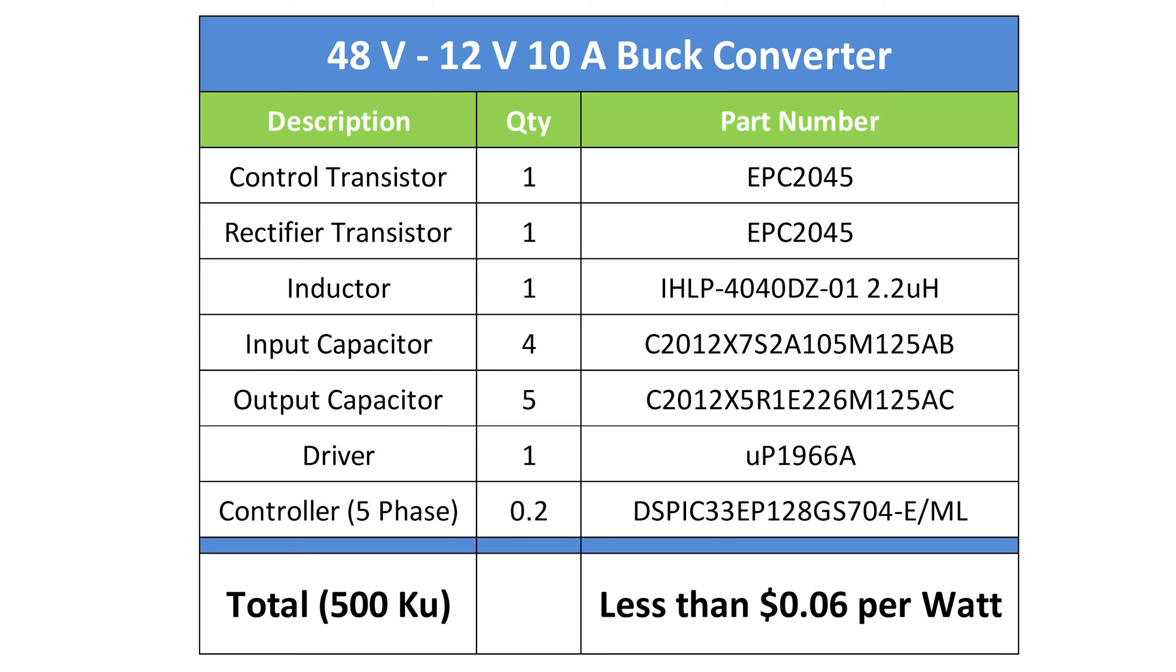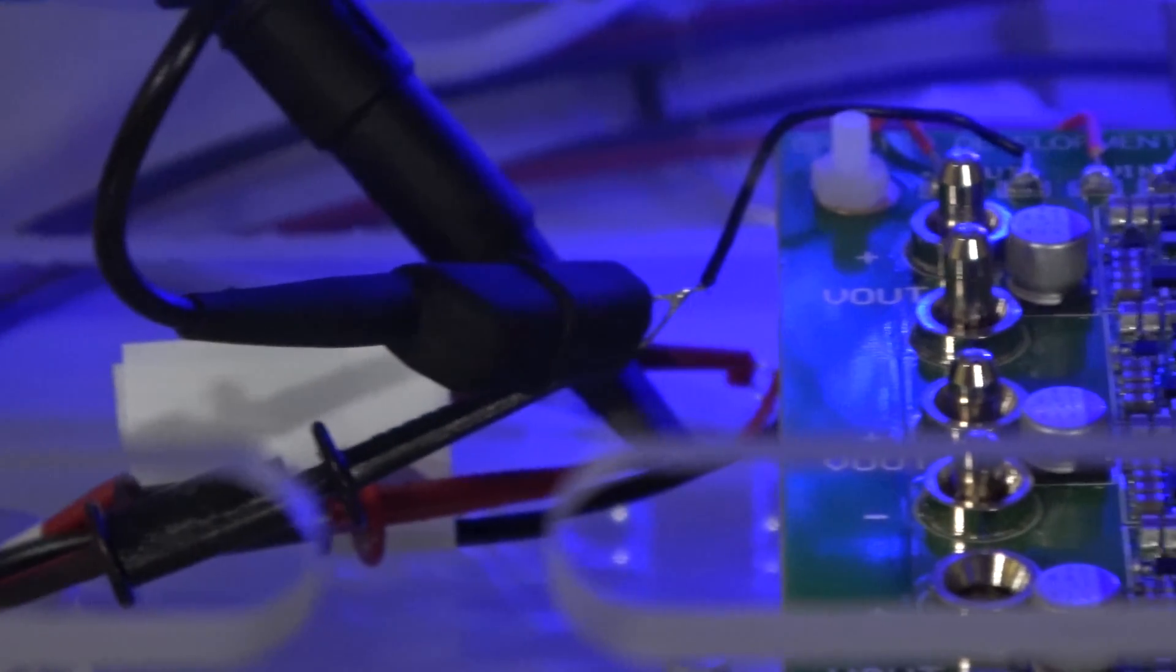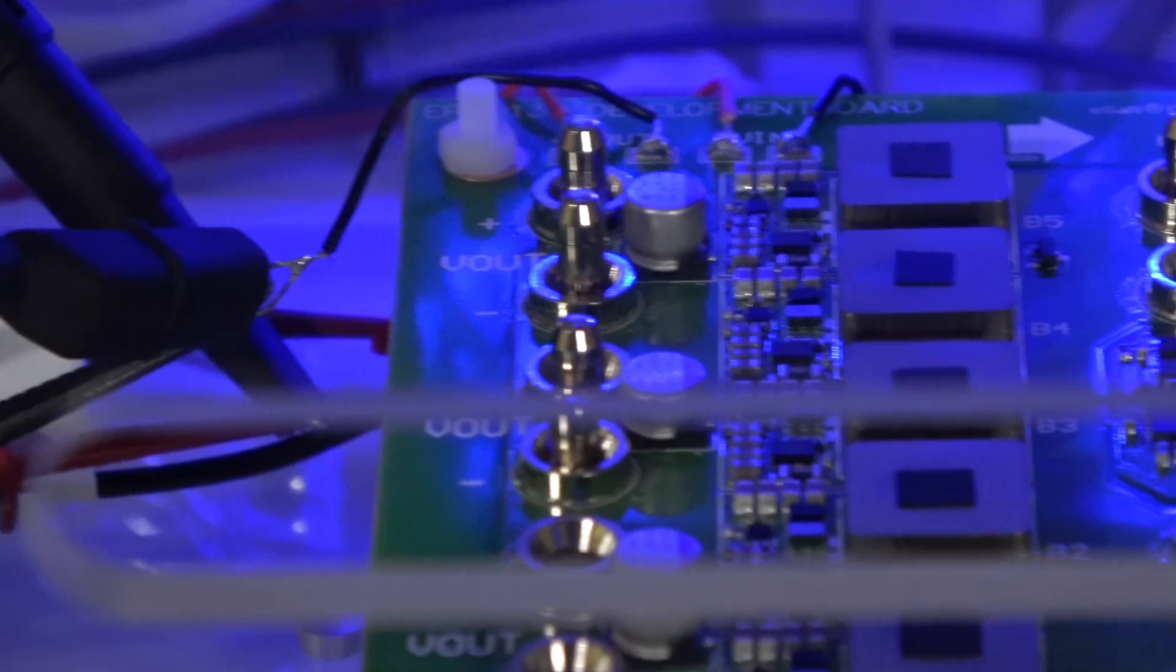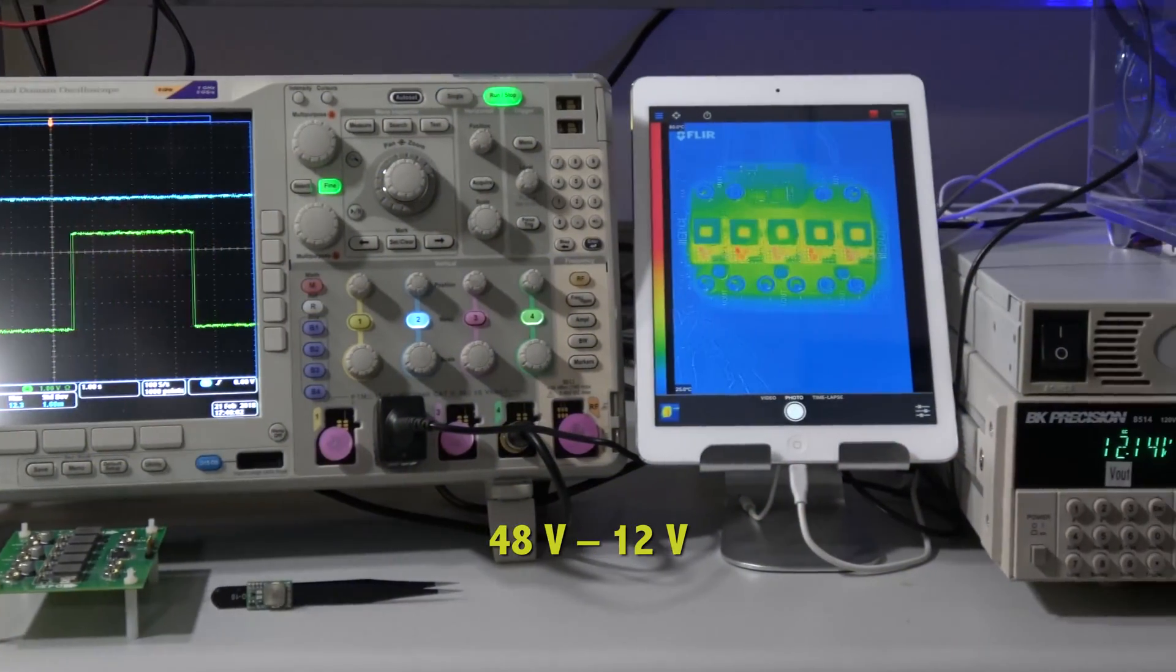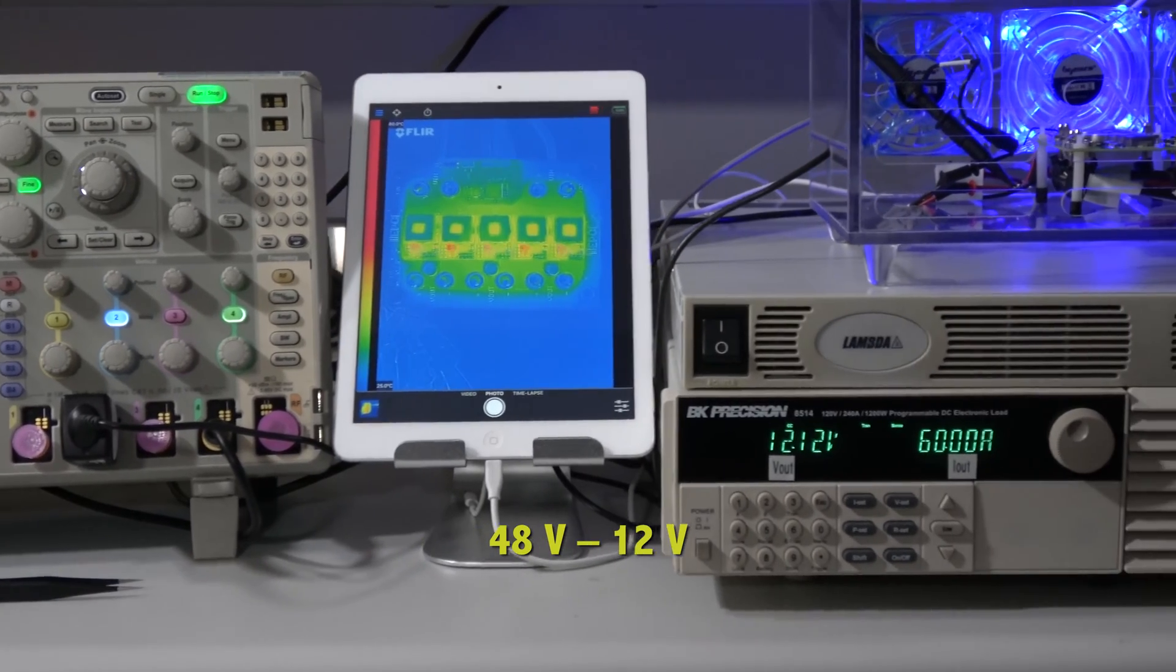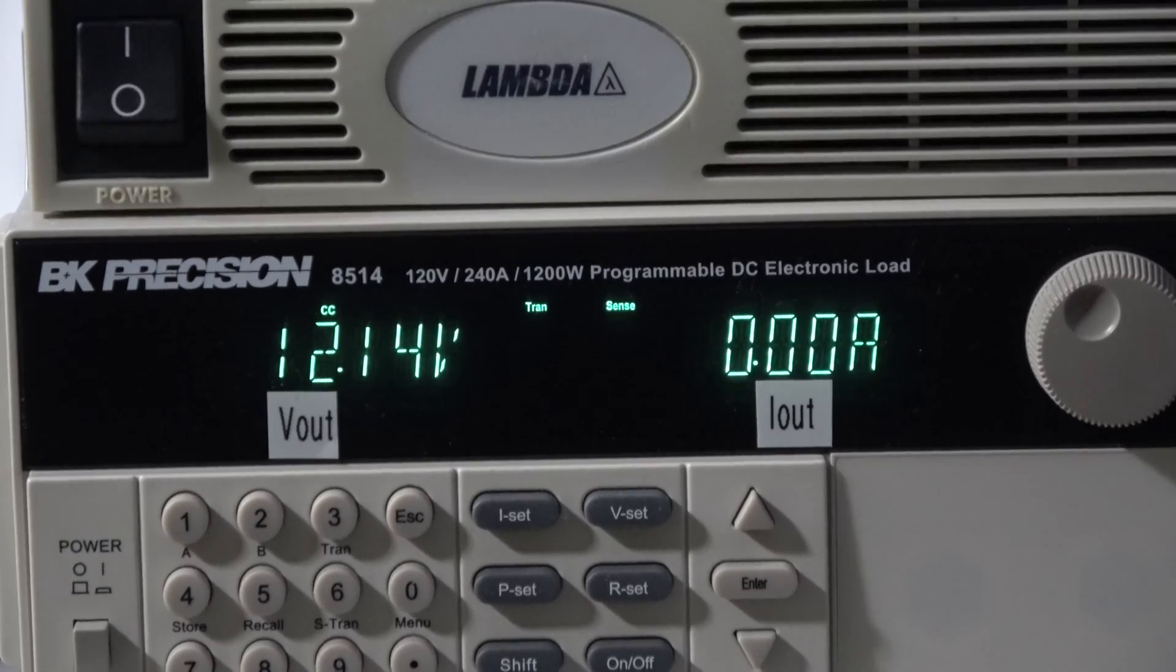Now let's take a deeper look at the performance of the EPC-9130. The 5-phase EPC-9130 converter is shown here on the bench. In this demonstration, we provide the board with a 48V input and use a digital controller to regulate to a 12V output.